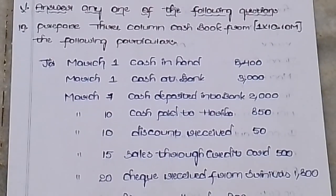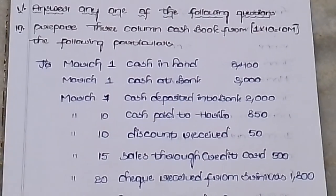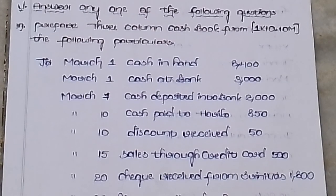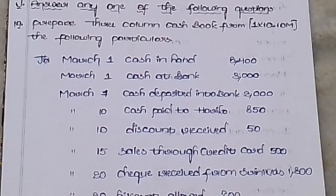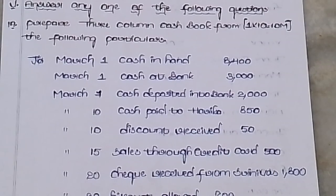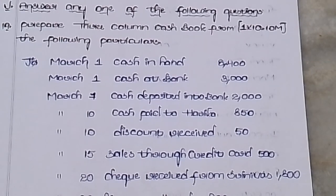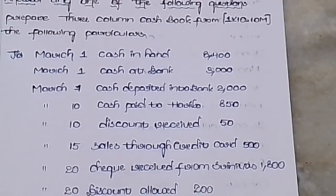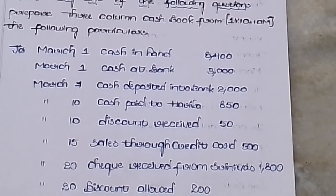Section E: Prepare a three-column cash book. Opening balances: cash in hand 8,400; cash at bank 3,000. March: cash deposited into bank 2,000. March 10: cash paid to Harika, discount received 50; sales through credit card 500; cheque received from customer.